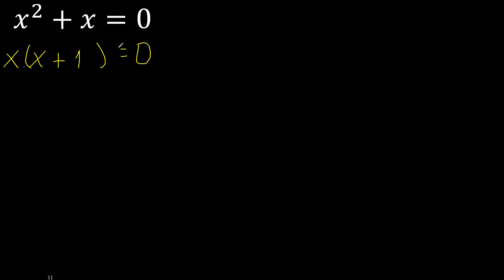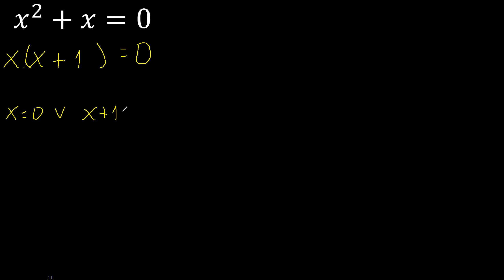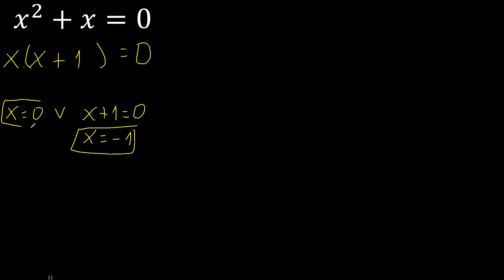Multiplied equal 0, therefore x equal 0 or equal 0. Here, 1 — change the sign. Finish it.